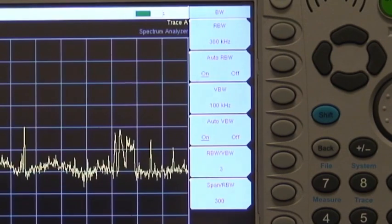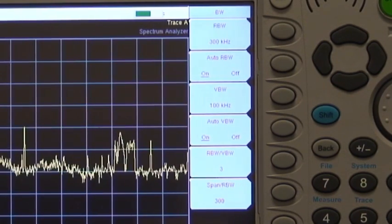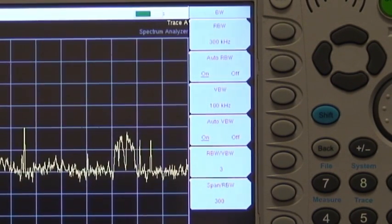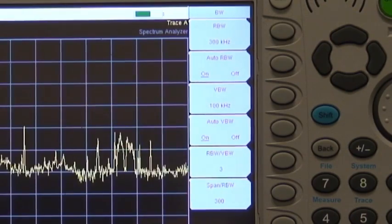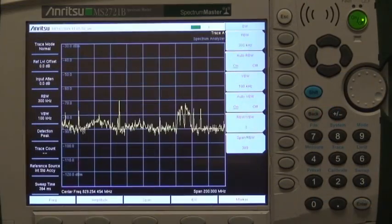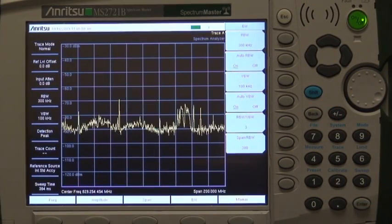Anritsu handheld spectrum analyzers have default settings for resolution bandwidth and video bandwidth that are good for general signal viewing. For some signals, different settings are needed to be able to make measurements.